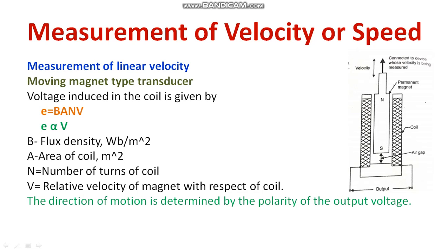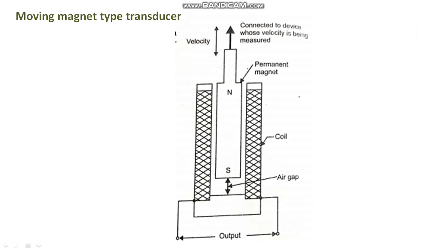The direction of motion is determined by the polarity of the output voltage — whether it is in the clockwise or anticlockwise direction, you can determine based on the output voltage. From this mathematical expression, we can conclude that induced EMF is directly proportional to velocity, so velocity can be measured in terms of induced EMF. The coil is stationary while the permanent magnet is movable — this is how you measure velocity using a moving magnetic type transducer.